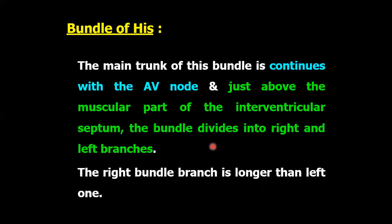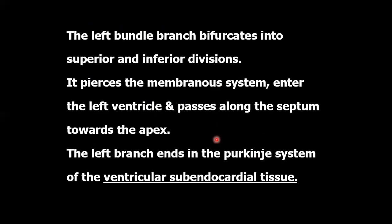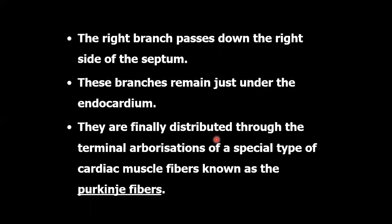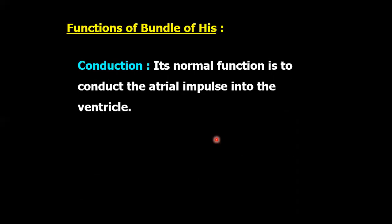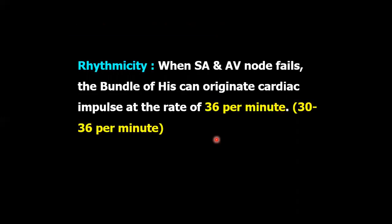Bundle of His: the bundle of His is continuous with the AV node, and just above the muscular part of the interventricular septum, the bundle divides into right and left branches. Functions of the bundle of His: its normal function is to conduct the cardiac impulse into the ventricles. Regarding rhythmicity — when both the SA and AV nodes fail, the bundle of His can originate a cardiac impulse at a rate of 36 per minute.